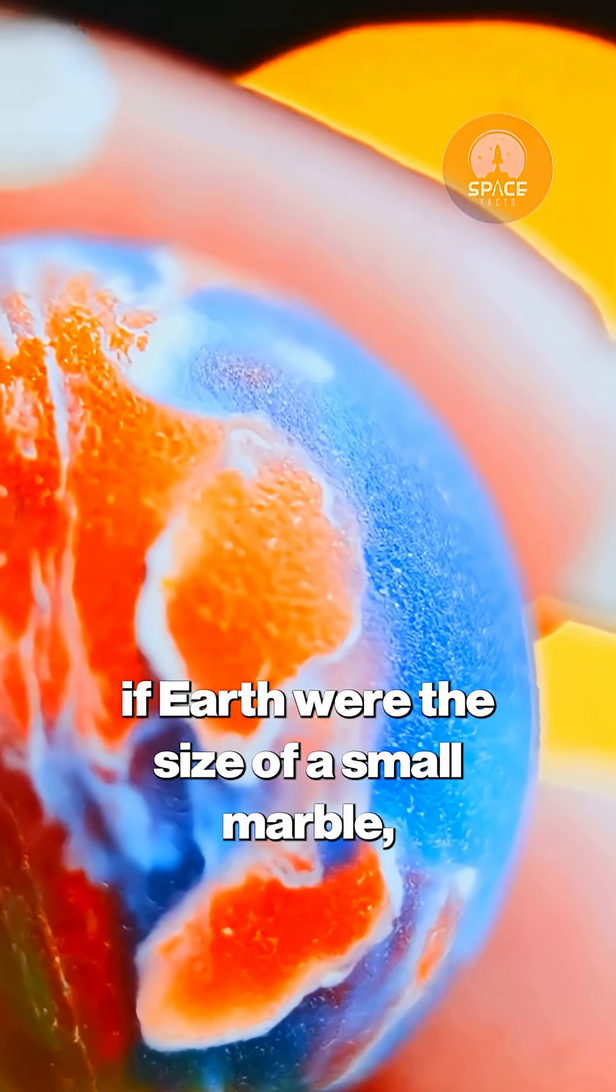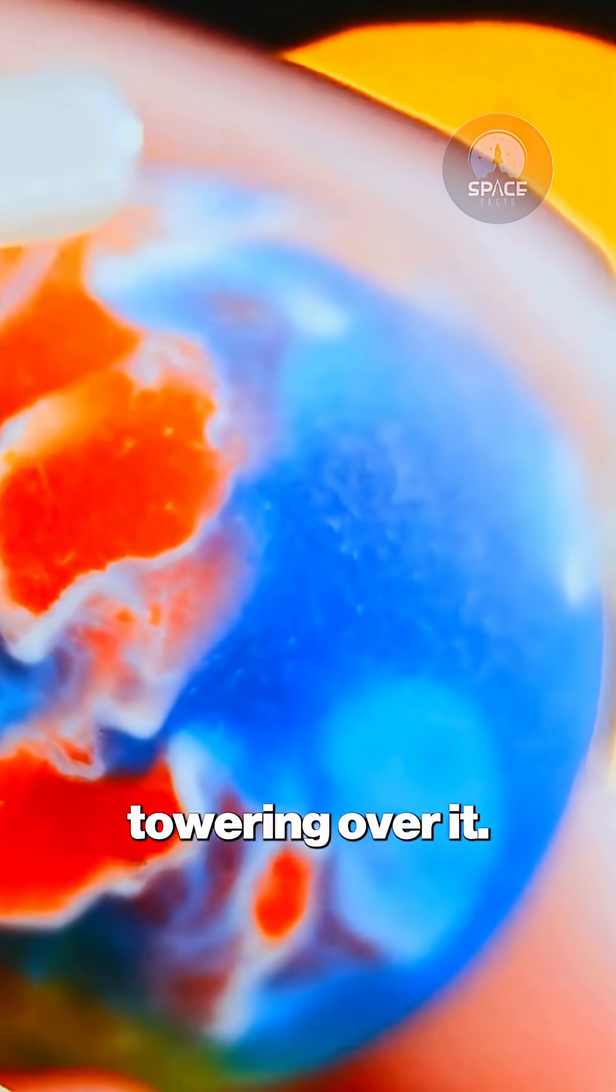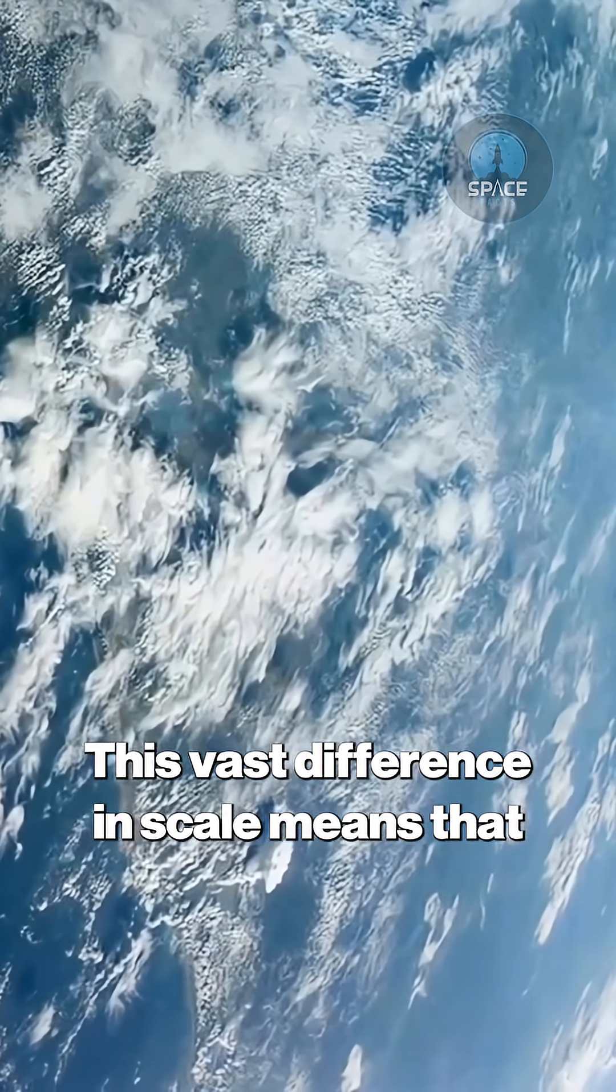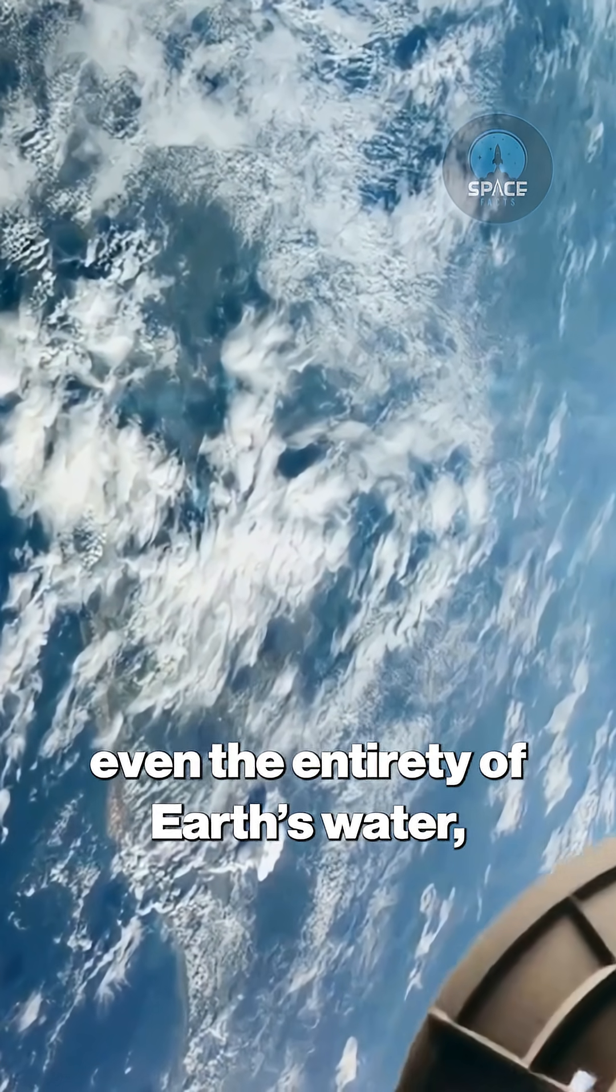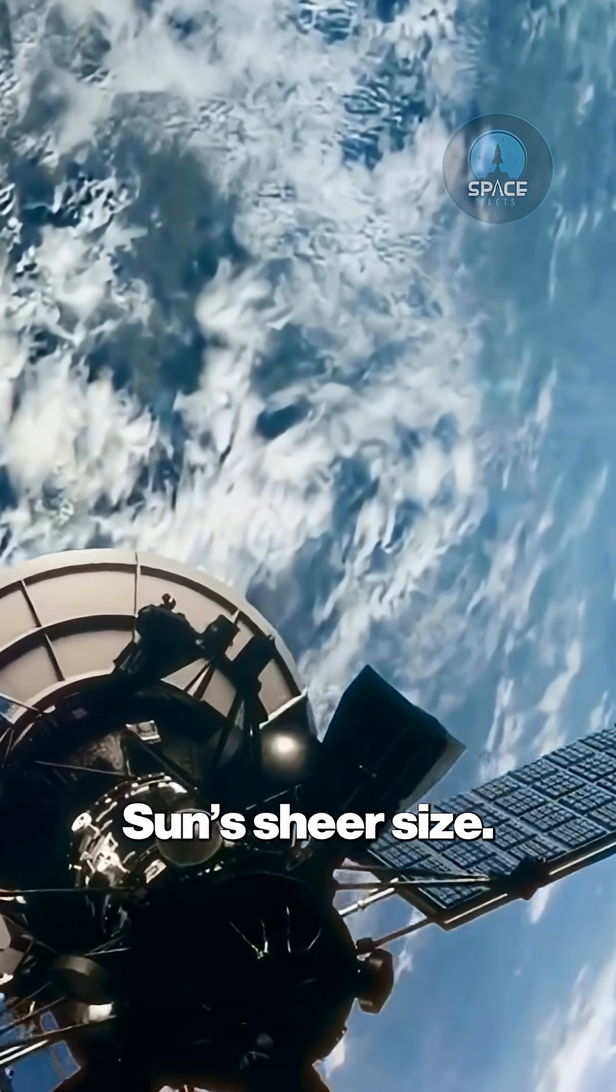To put it simply, if Earth were the size of a small marble, the sun would be a gigantic beach ball towering over it. This vast difference in scale means that even the entirety of Earth's water, which feels endless to us, is just a tiny speck compared to the sun's sheer size.